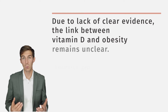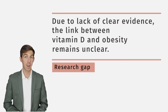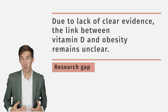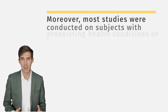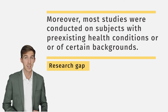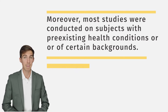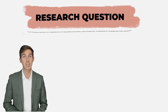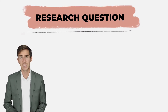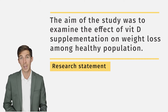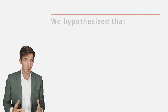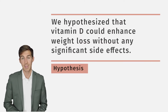Now it's time to establish the research gap. The previous statements nicely lead on to this: we are saying that we lack clear evidence linking vitamin D to obesity, and that most existing studies were conducted on subjects with pre-existing health conditions, so there is a research gap to be filled. You must then define your research question and explain how it addresses that gap. Here we state that the main aim of this study is to investigate the effect of vitamin D on weight loss among healthy populations, and we define a specific hypothesis that we will either prove or disprove.